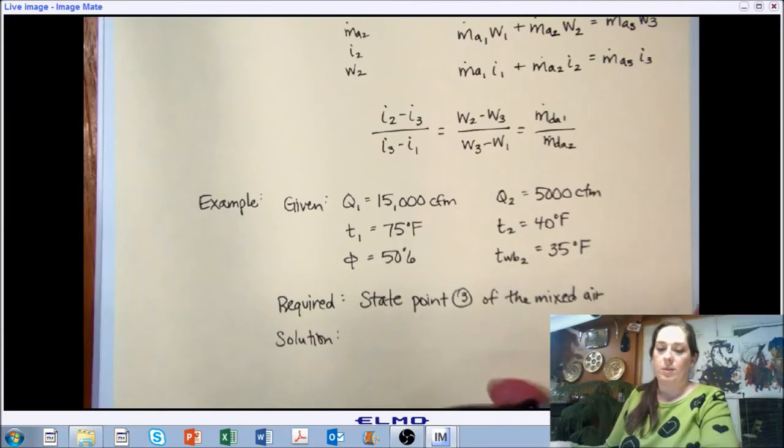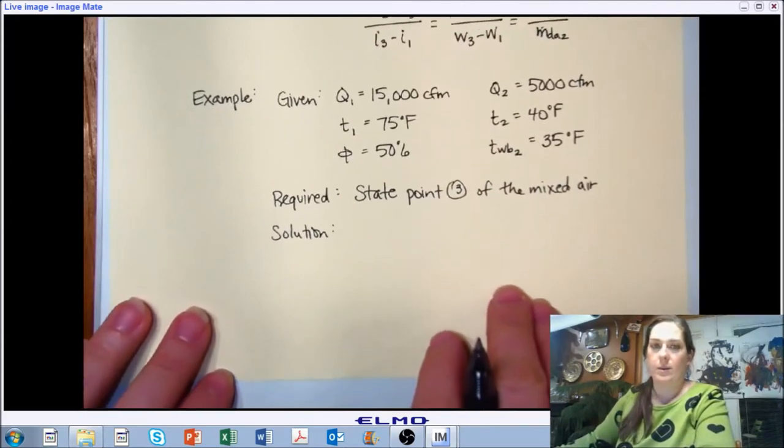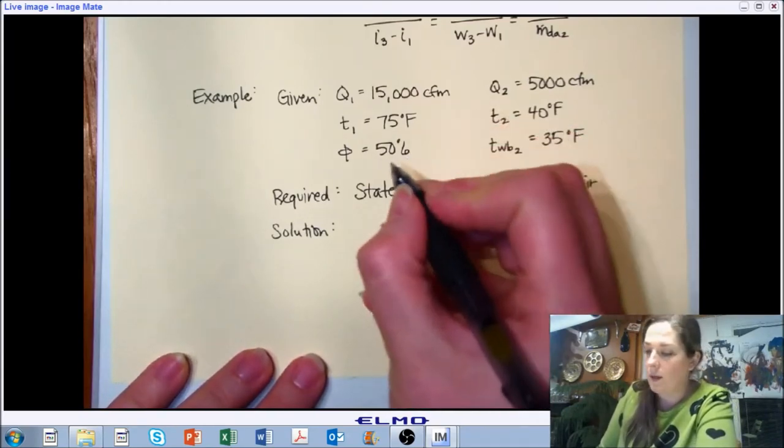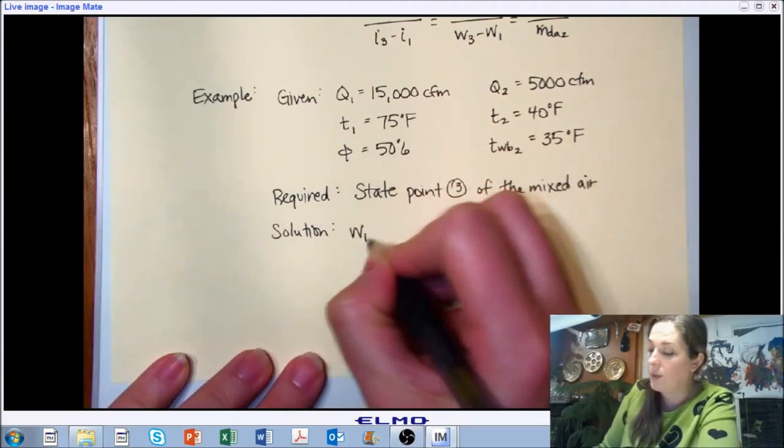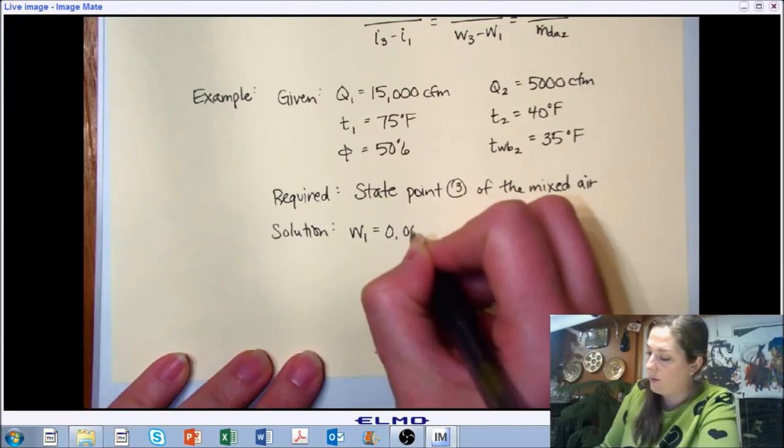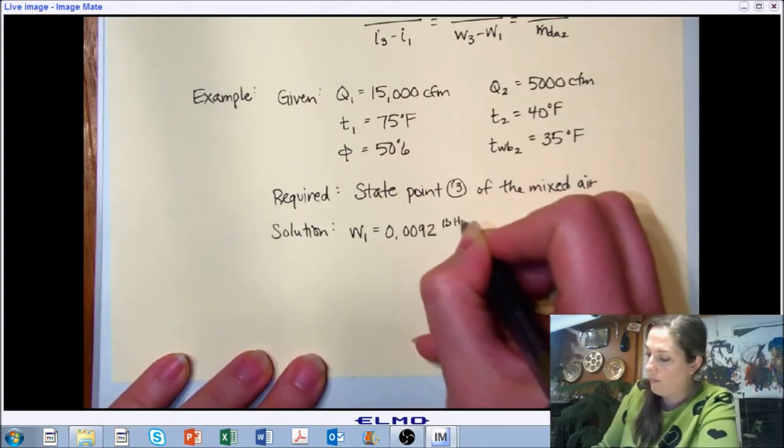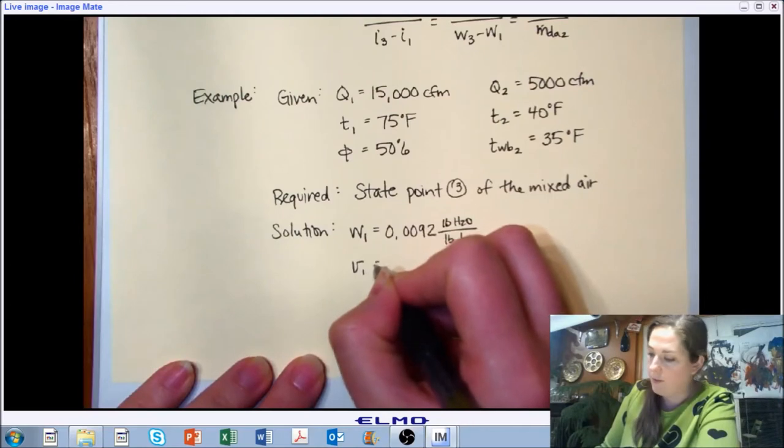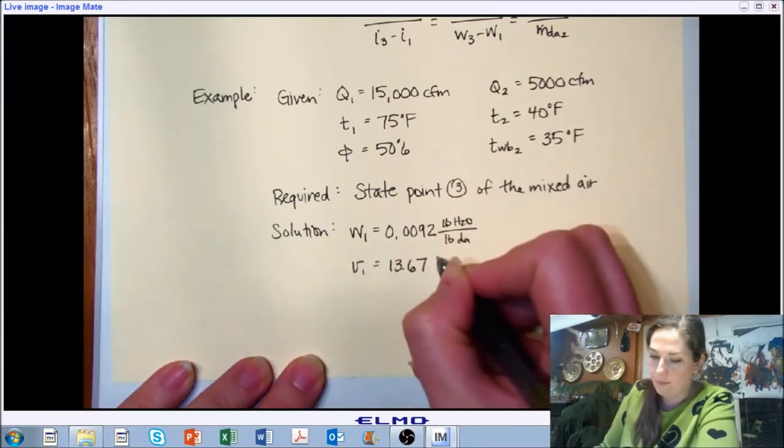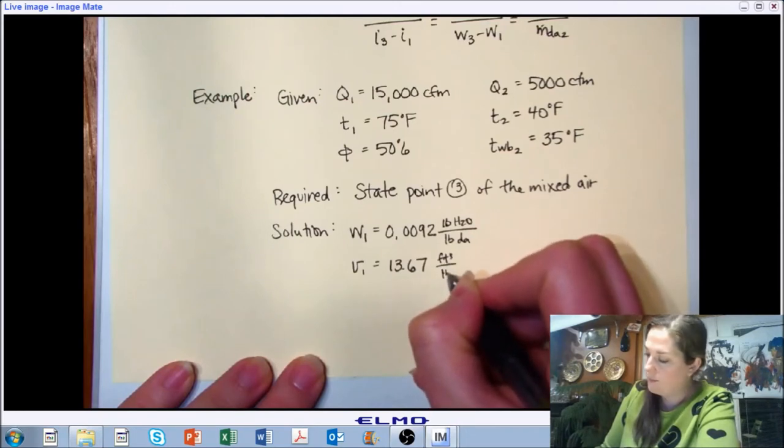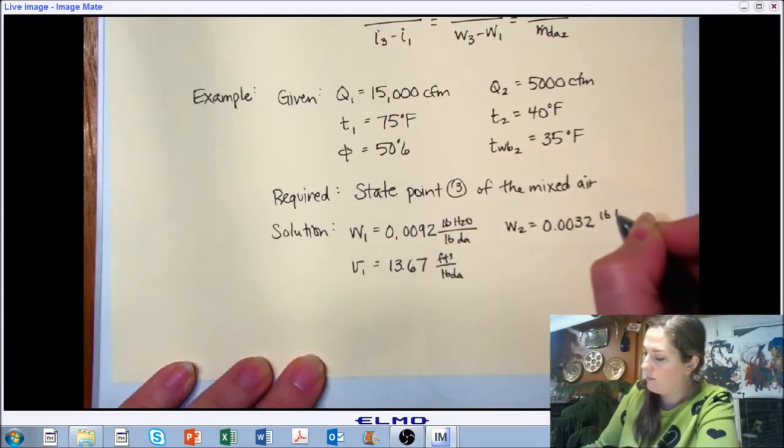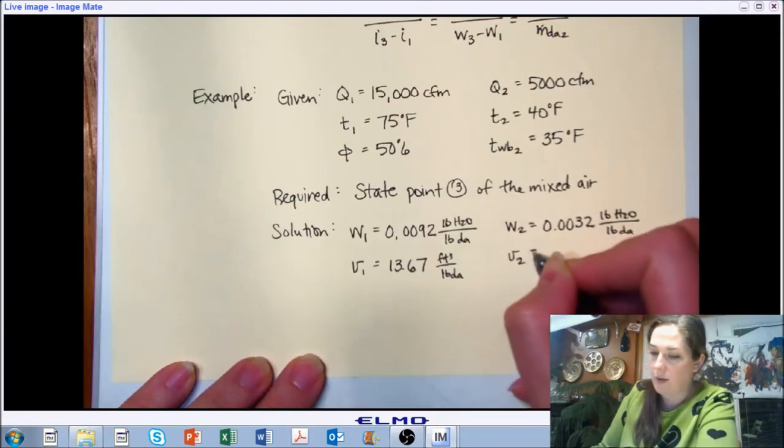And we are required or asked to find state point three. And we can just apply our relationship equations that we just looked at. So from the properties we're given, we need a few additional state points, a few additional properties for each of our state points. We need our humidity ratio and our specific volume. You can pull these off the psychrometric chart or use the calculator, as we've been saying.